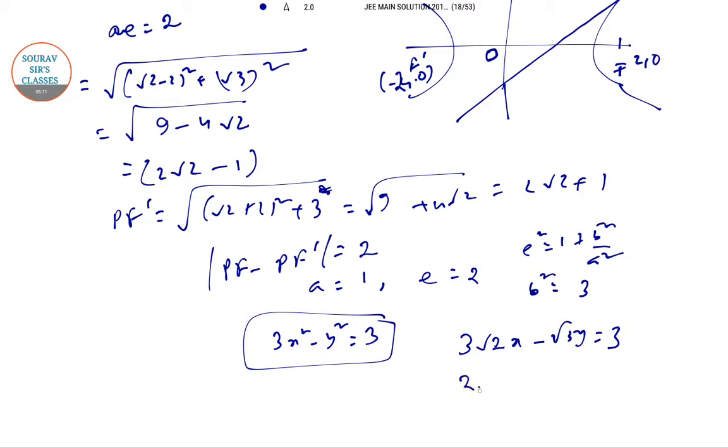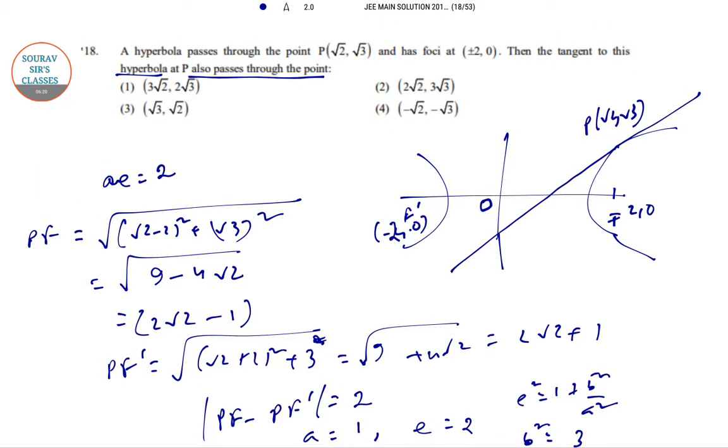The line passes through root 2 comma root 3. That is the only thing which will satisfy the structure. Now you can check with the options. Just put all these values and you will be able to see that only option 2 based structure is coming out to be correct.